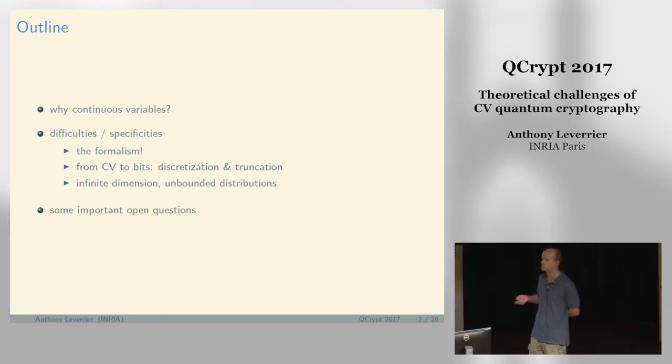Some of the specificities are of course the formalism, which is quite different from BB84. People always ask, where are the bits? Where is the secret when you have continuous variables?